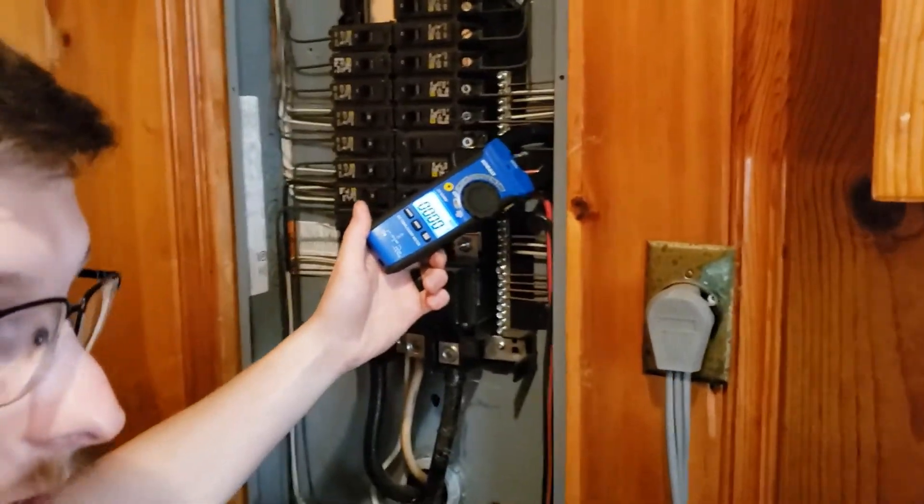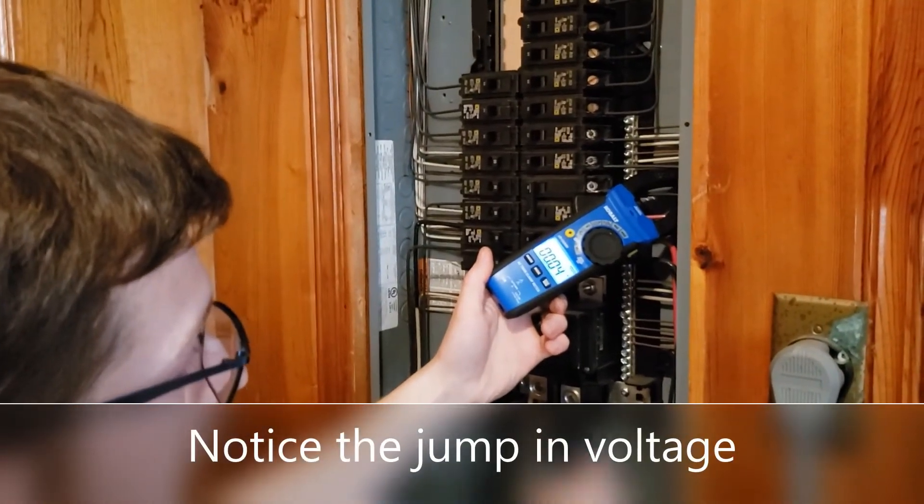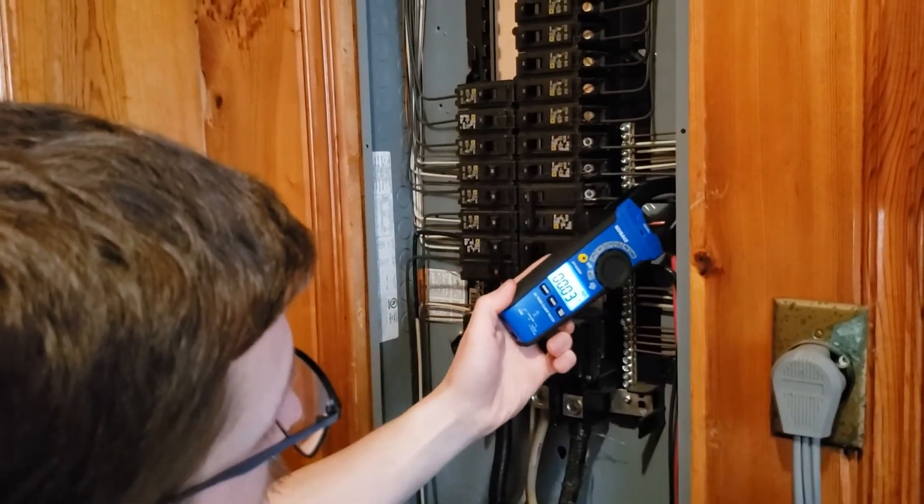And we're reading 0.01 amps because the dryer's not turned on. Now, if we turn the dryer on, you see it's going to spike up there and start using some amps.